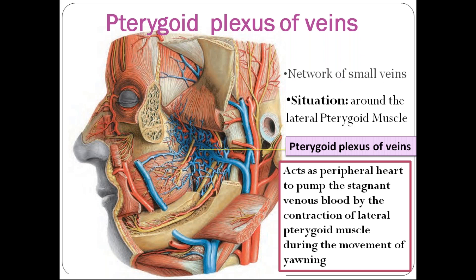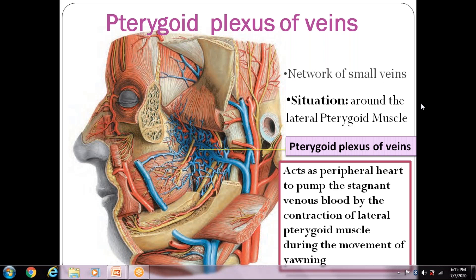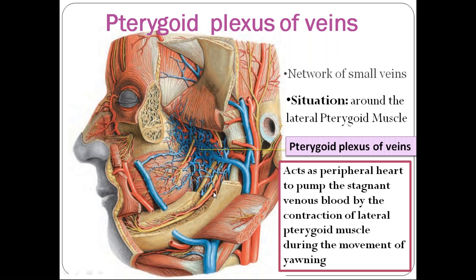It acts as a peripheral heart. You know one more peripheral heart — what is the other peripheral heart? Anyone can answer in the chat box. It is the soleus muscle. And the pterygoid plexus of veins also acts as a peripheral heart.